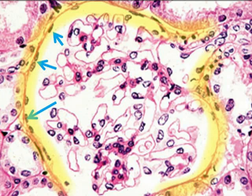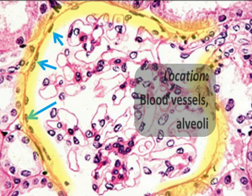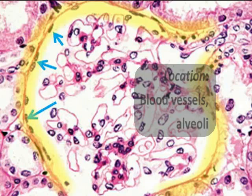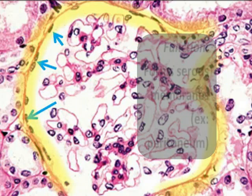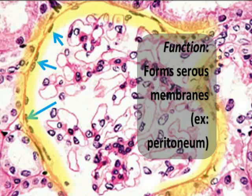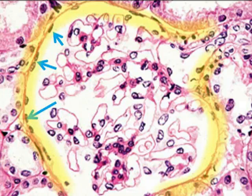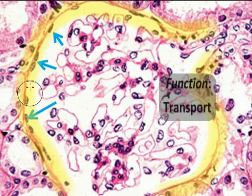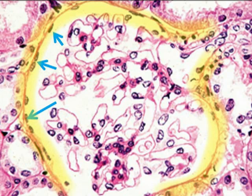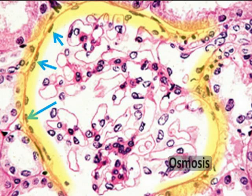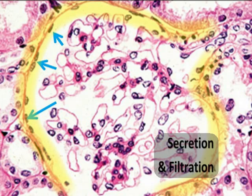Simple squamous epithelium lines the alveoli and the respiratory membrane within the lungs where gas exchange takes place. It also forms the membranes of the peritoneum and other serous membranes like the pericardium. It's very thin and very flat, which aids it well in transport mechanisms such as diffusion of gases and ions, and osmosis of water across the membrane.